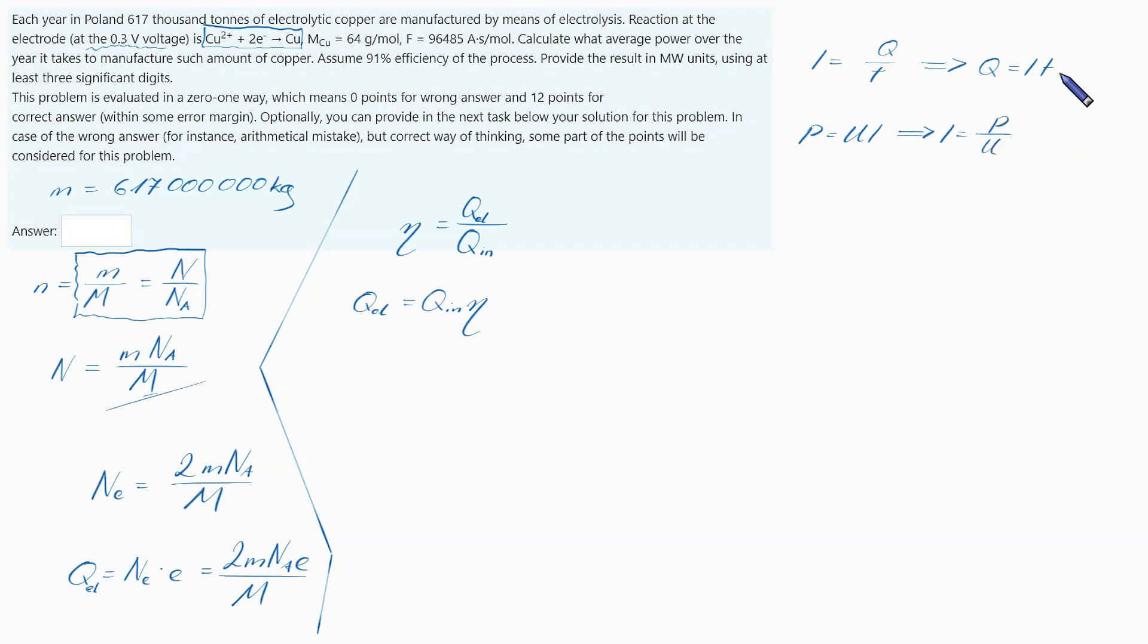If I combine those two, I get something like that: Q is equal to P times T over U. And this is Q_in. This is charge that I pull out from a socket or a battery or whatever. This is the amount of charge that went into reaction chamber. Because of efficiency below 100%, not all of this charge actually reacted with copper.